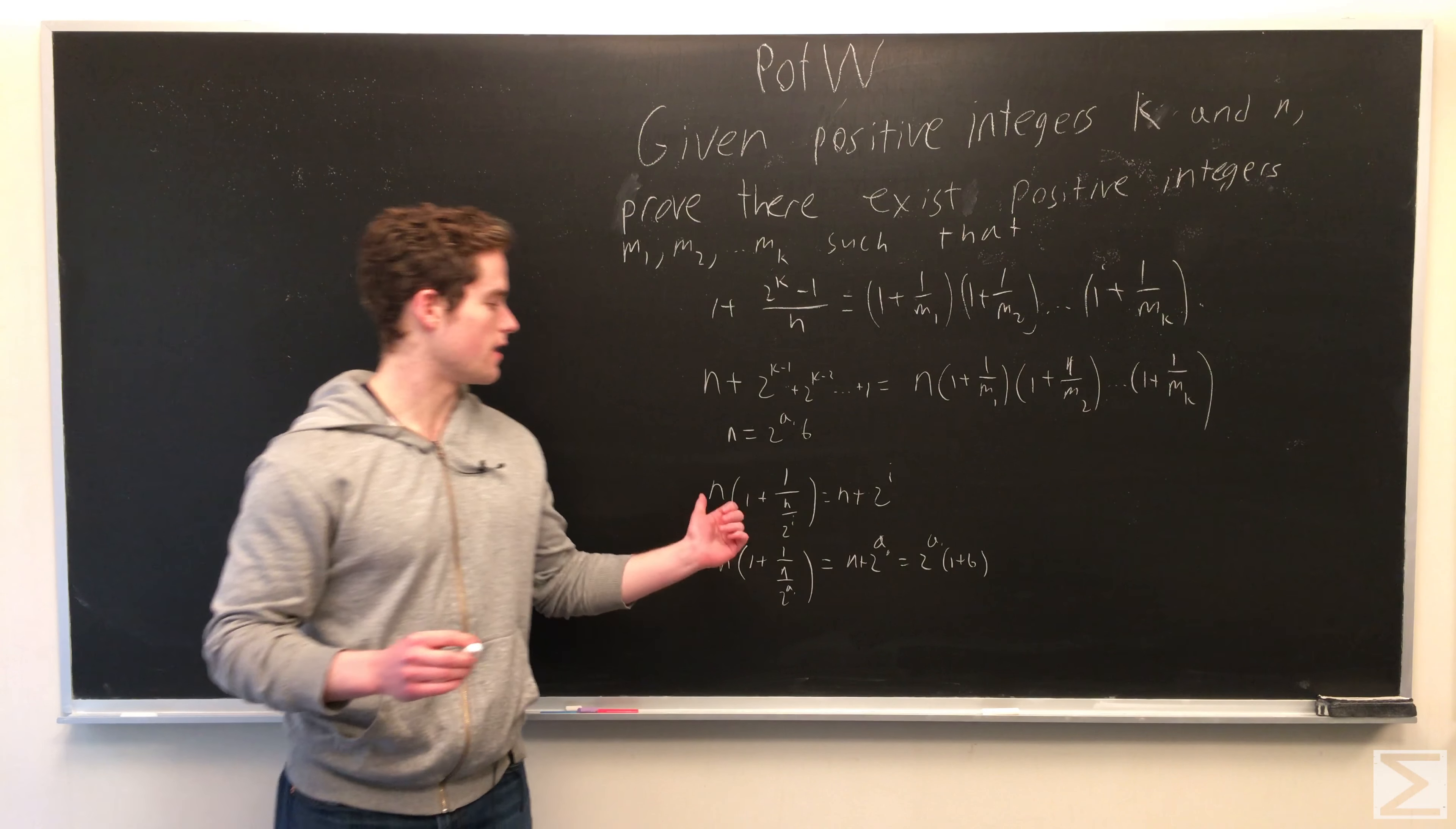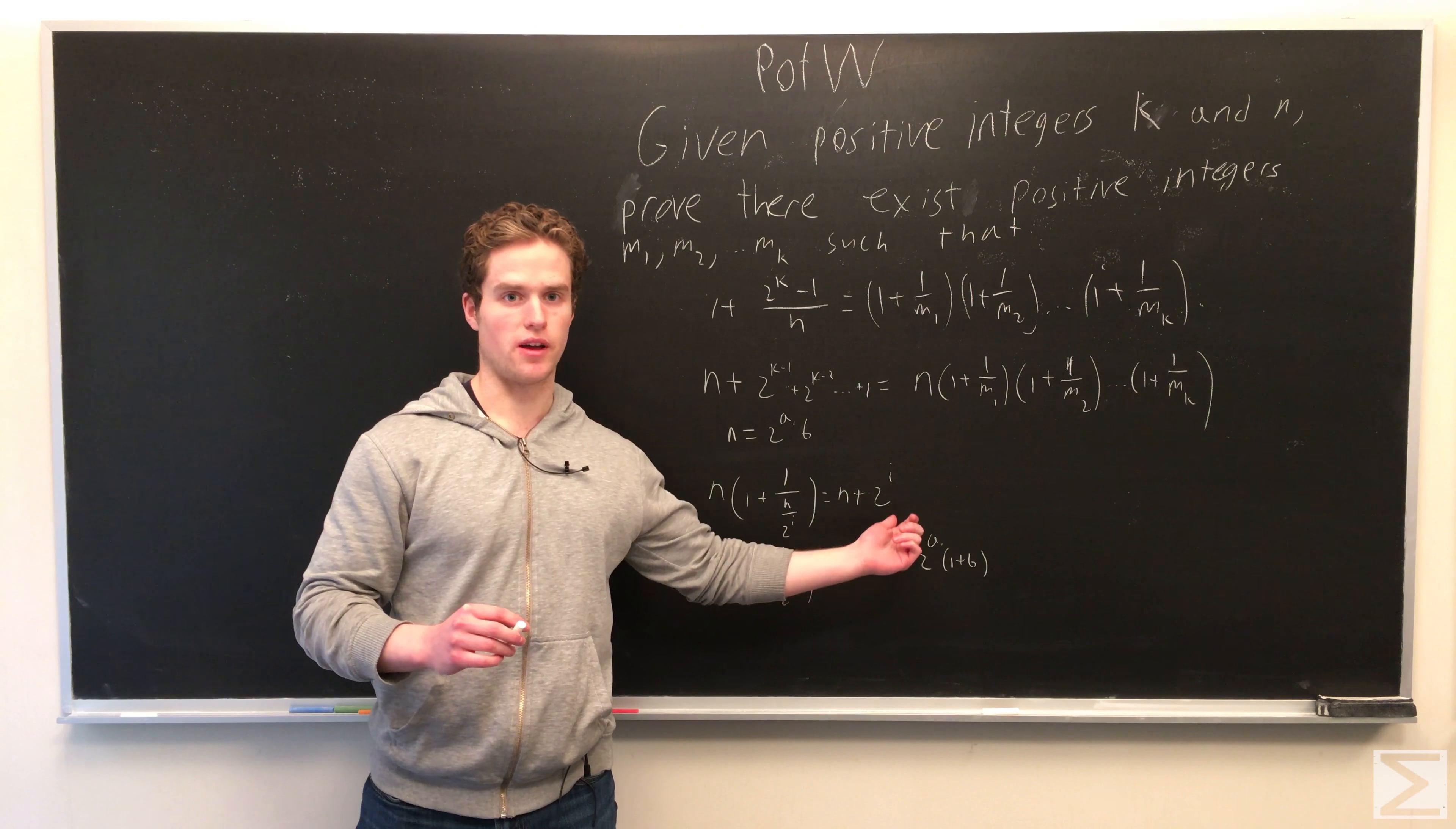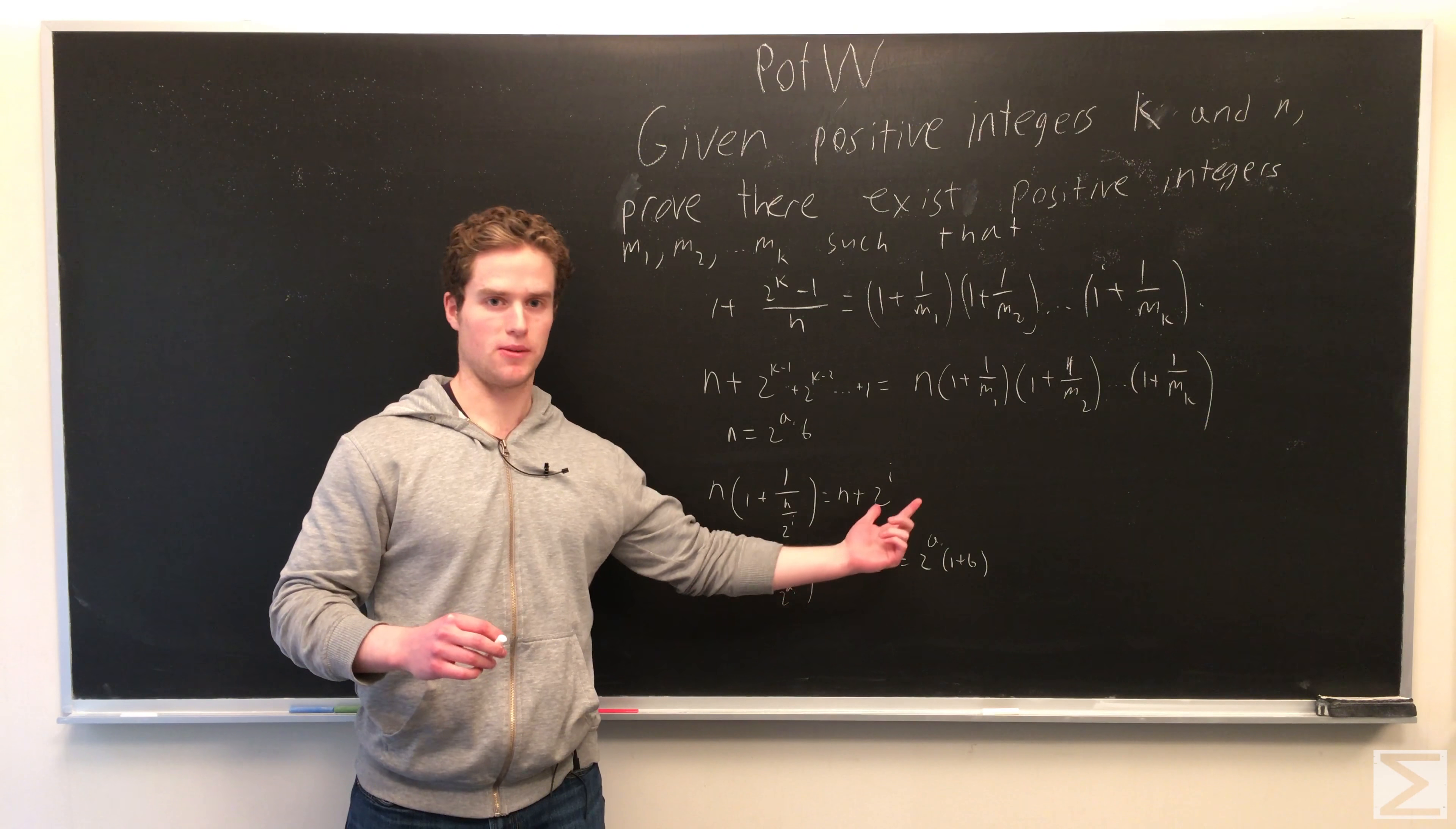First note, let's say we have n times 1 plus 1 over n over 2 to the i, where we assume i is less than or equal to a1. That will give us n plus 2 to the i. And this will be divisible by at least the power of 2 to the i. So it will definitely be divisible by 2 to the i minus 1.